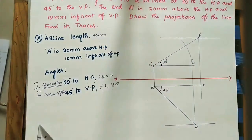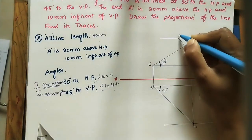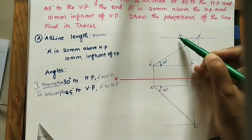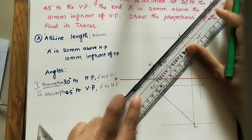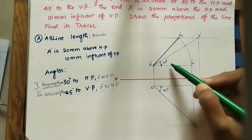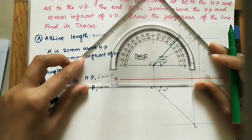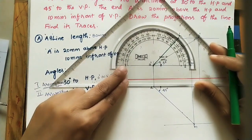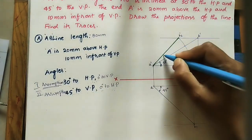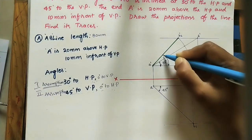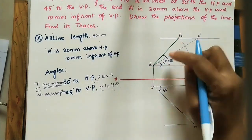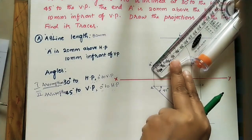Where the arc intersects the locus line, mark that point as b2-dash. Join a-dash to b2-dash — this is the final front view. Measure the angle this line makes with the horizontal plane; it is approximately 48 degrees. You can also measure the length of the final front view, which is about 56 mm.